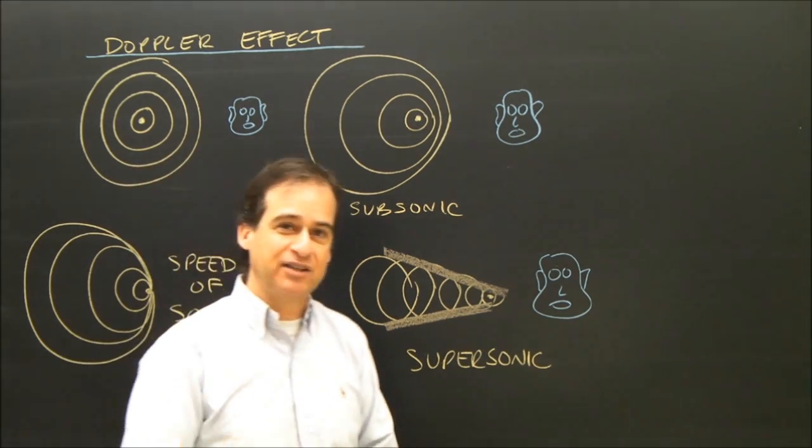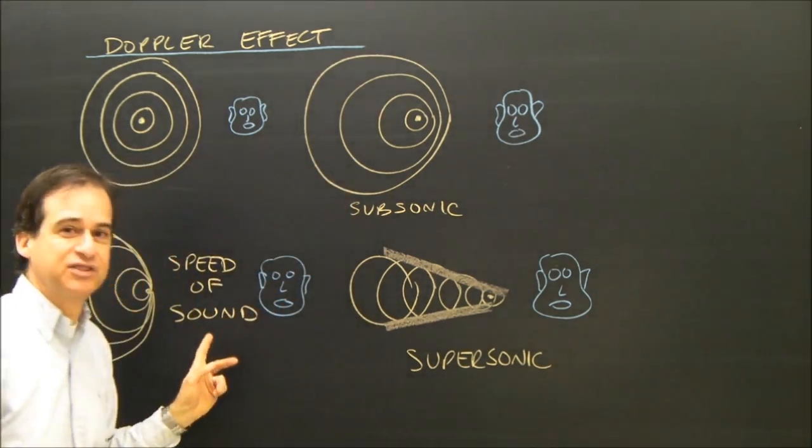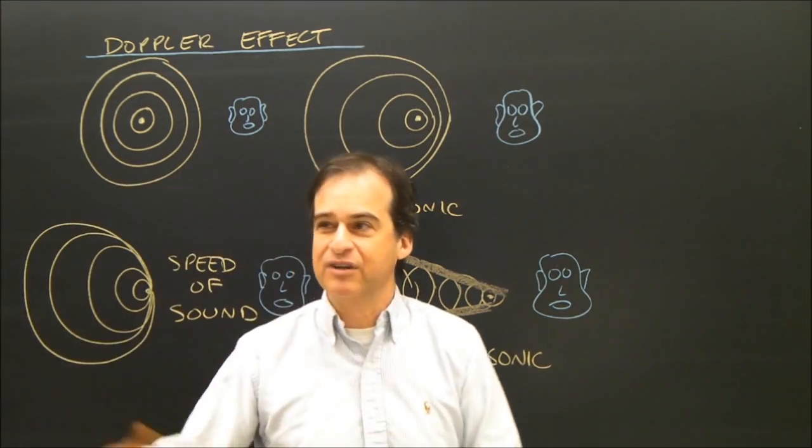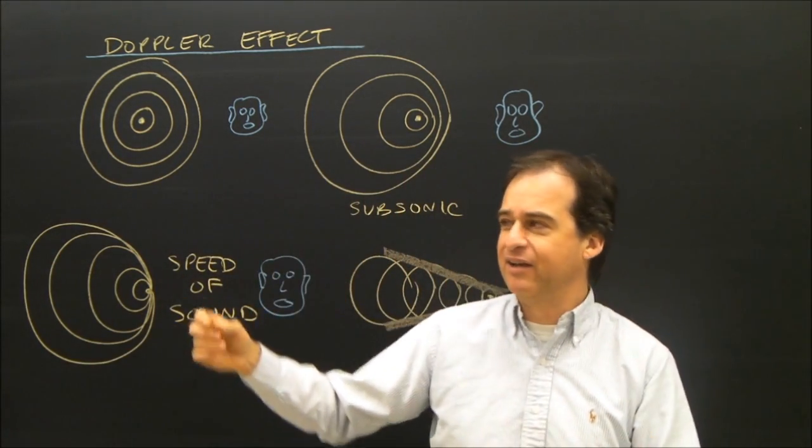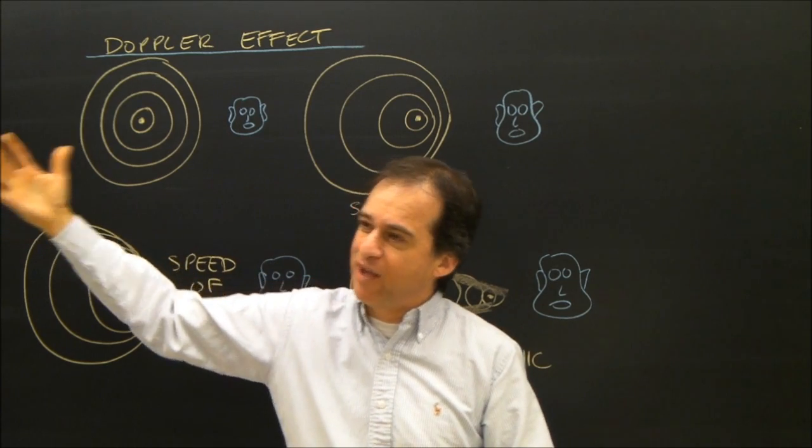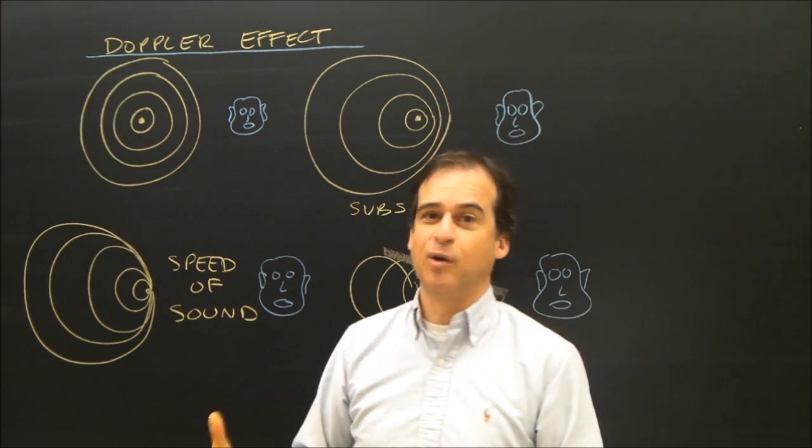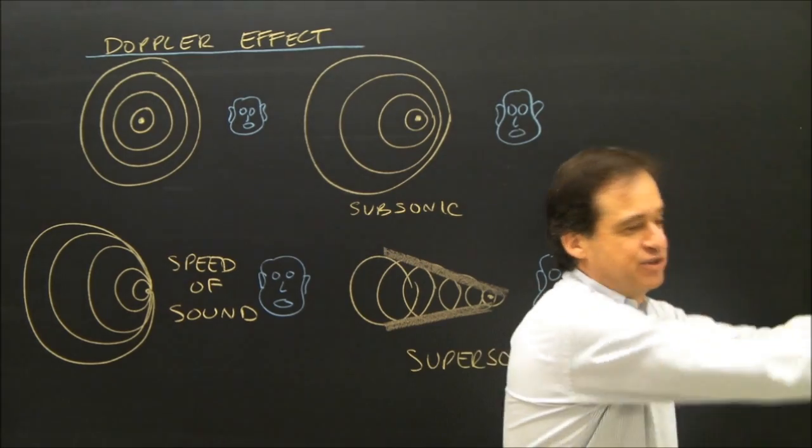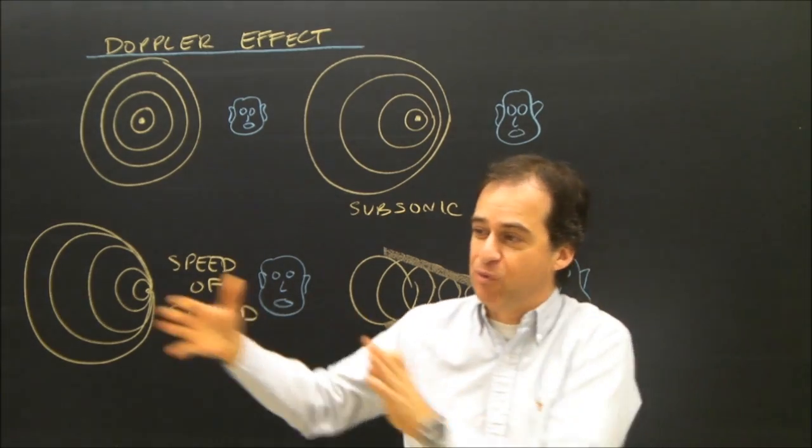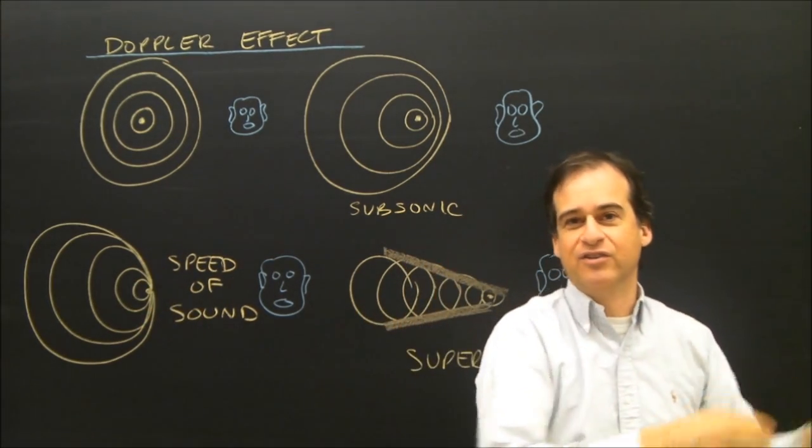And so airplanes that travel faster than the speed of sound, or at the speed of sound, are creating a sound wave. And it's not like a bang. What it is, is the sound wave, as it passes by you, all those sound waves, you hear a bang. But that's a continual sound moving along. It's just from where you are, there's no sound, there's sound, and then there's no sound.